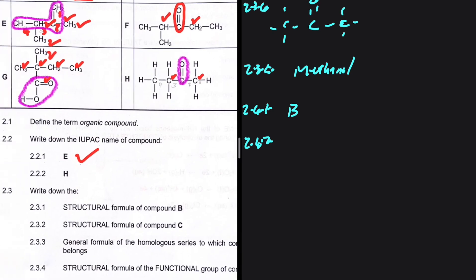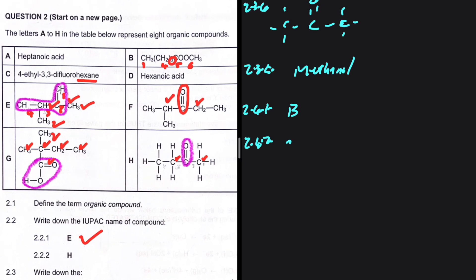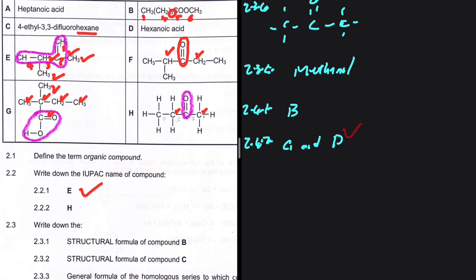For the two compounds that are chain isomers of each other: compound G and compound D. Compound D is straight-chain hexanoic acid and compound G is also an acid with six carbons but a different chain arrangement — same molecular formula, just different chains, making them chain isomers.